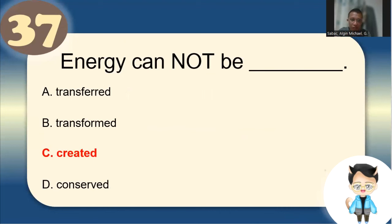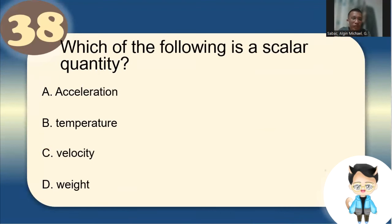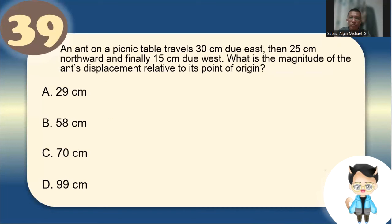Number 37: Energy cannot be created nor destroyed — that is the law of conservation of energy, letter C. Number 38: Which is a scalar quantity? Temperature is scalar. Acceleration, velocity, and weight are vector quantities.